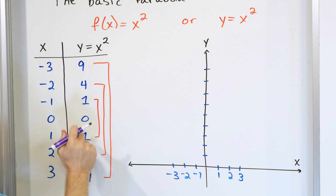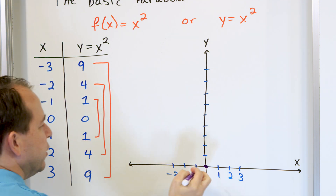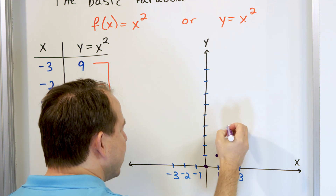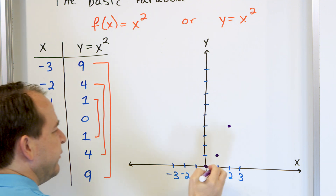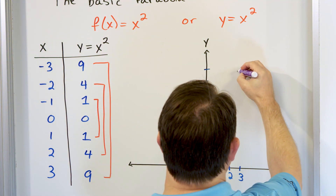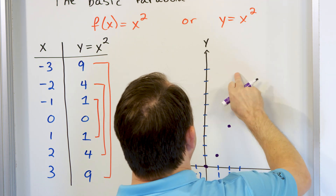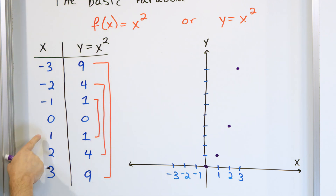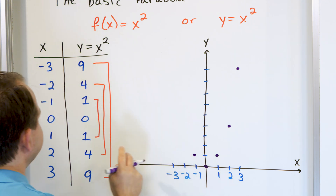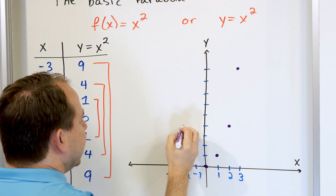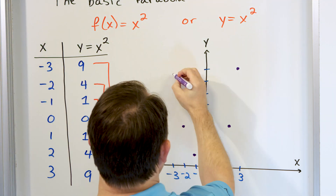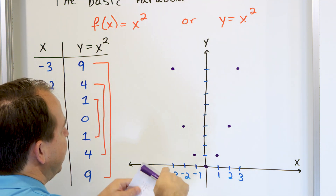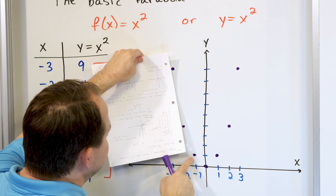Let's go ahead and plot this. We have (0, 0) right at the origin. We have (1, 1) right here. We have (2, 4), which is at x=2, y=4, somewhere right around there. And then (3, 9) — let me stand in front to try to line it up as best I can — that point is at 9. Now let's go the other direction: (-1, 1) is right here. (-2, 4) is right here. And (-3, 9) is up here as well.